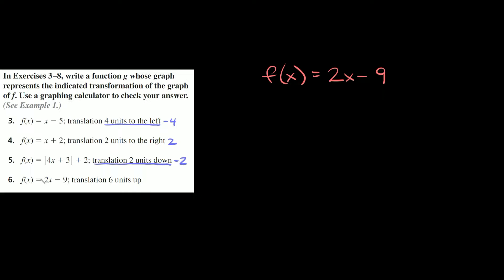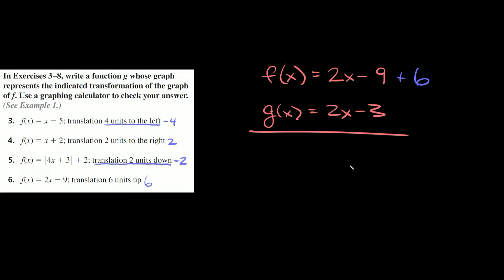Lastly, f of x is equal to 2x minus nine. This time we're going to translate it six units up, so that would be a positive six — literally just put a positive six at the end. So g of x is equal to 2x minus three.